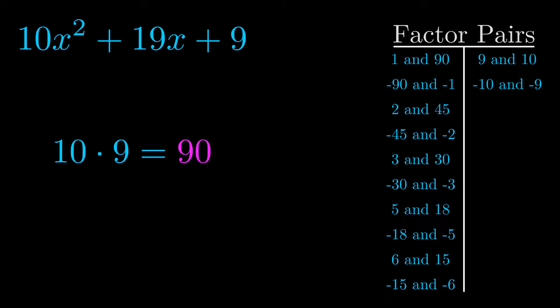The b value is the coefficient on the x term. That's the middle term, the one that we haven't done anything with yet. And really this is the only factor pair that we need.